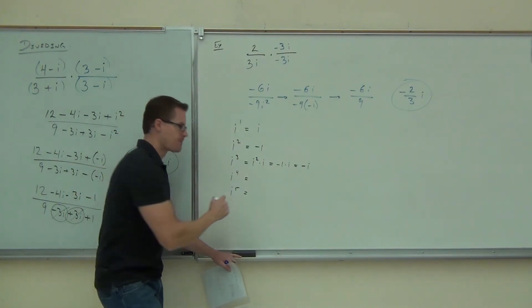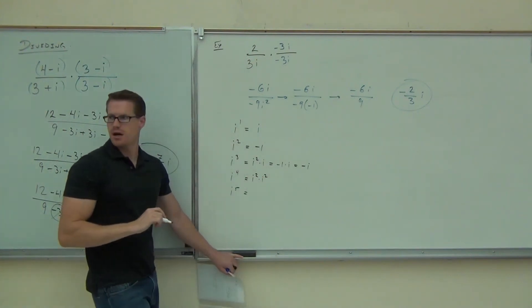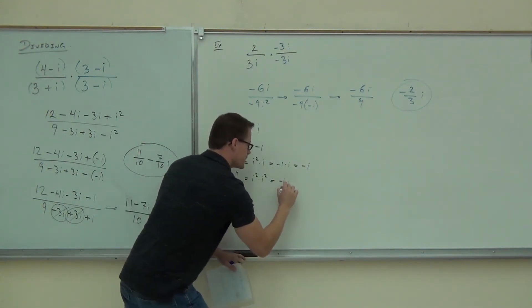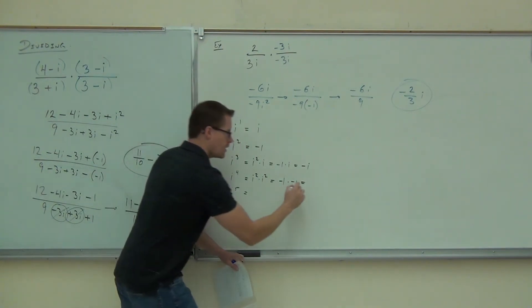Check out i to the fourth. i to the fourth is i squared times i squared. Is it not? How much is i squared, folks? No, i squared is not i. i squared is negative one. This is negative one times negative one. How much is negative one times negative one? Weird.